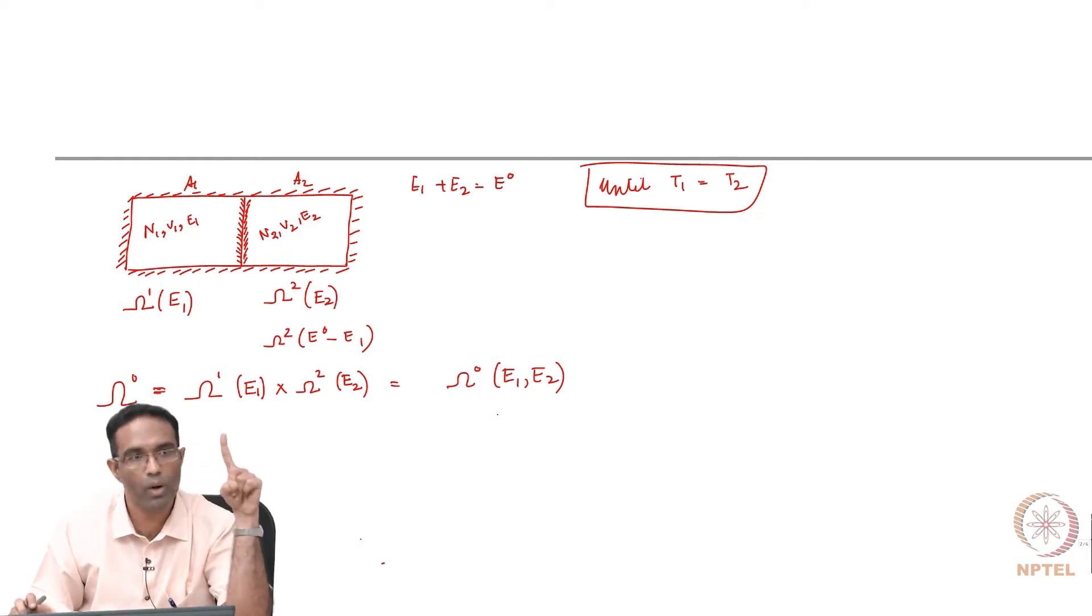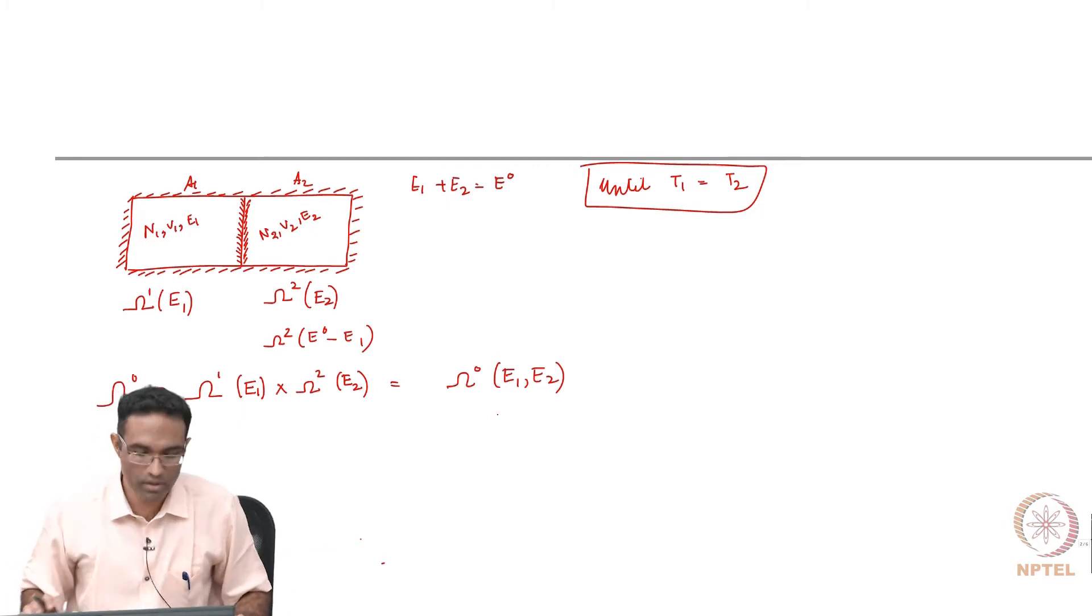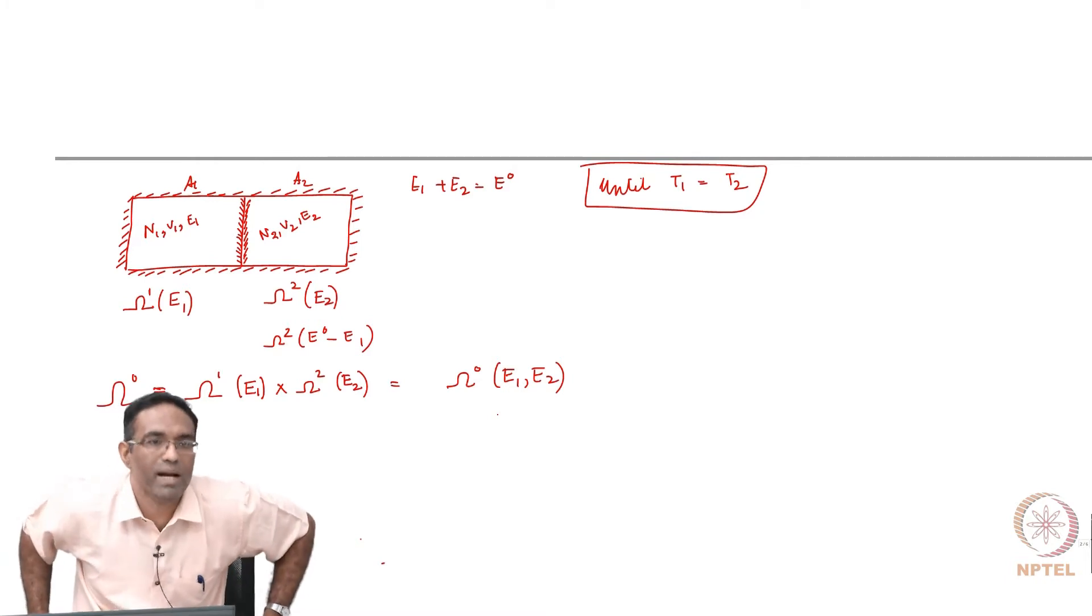We make one assertion, this is probably the only assertion that we will make without explicitly proving. We say that once equilibrium is reached, the value of omega naught is the maximum.